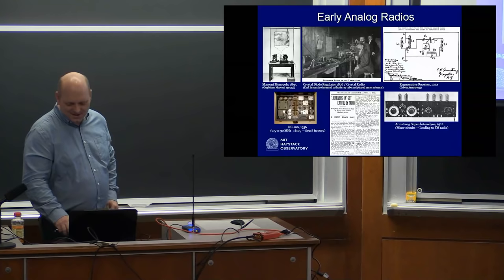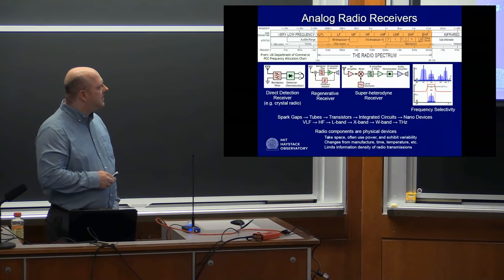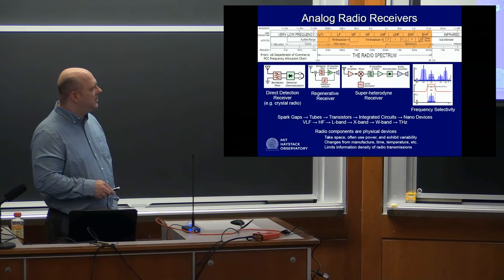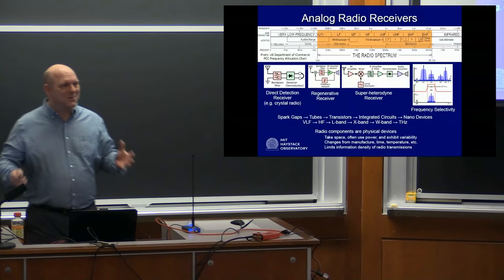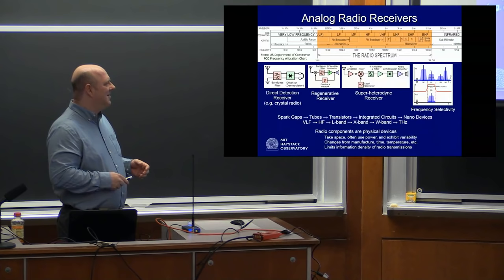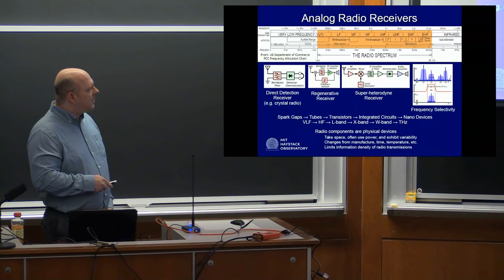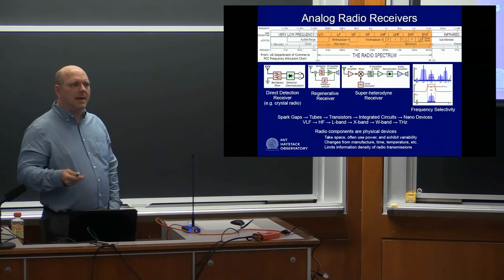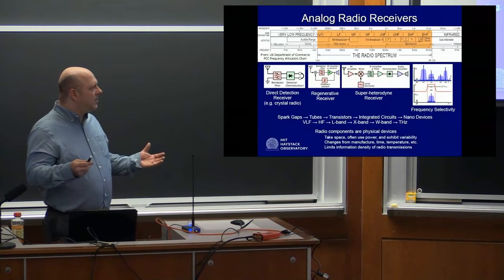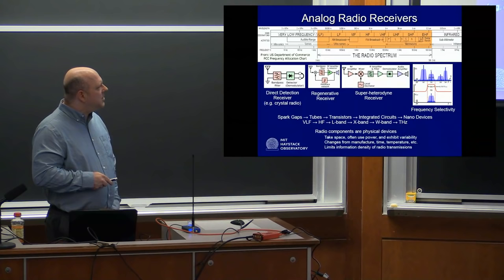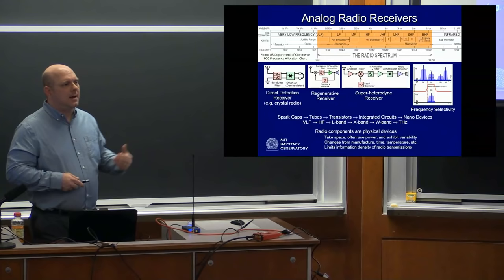Analog radio receivers evolved from low frequencies all the way up into terahertz, going from spark gaps to tubes to transistors to integrated circuits and now nanodevices — quantum lasers, integrated masers. This progression took us from VLF into HF, which brought about transatlantic propagation and communication. At World War II there was a shift into UHF, L-band, and then X-band. More recently, we've seen a shift to higher frequencies like W-band, which we have a radar at Haystack that operates there.